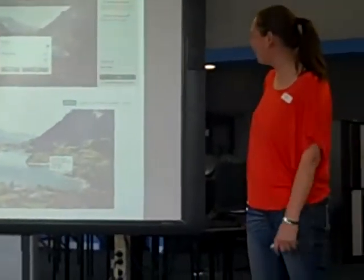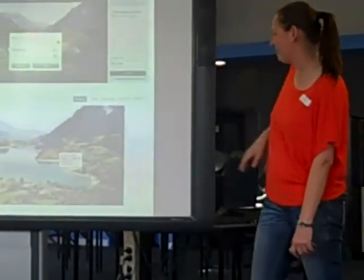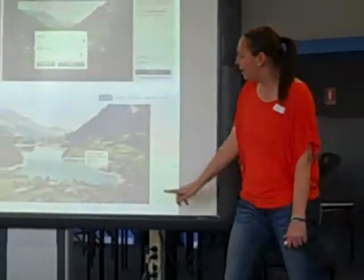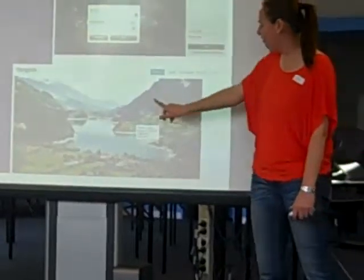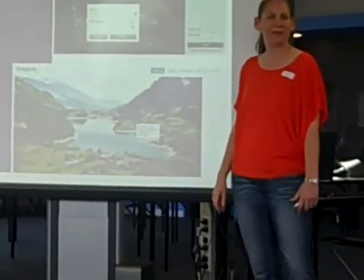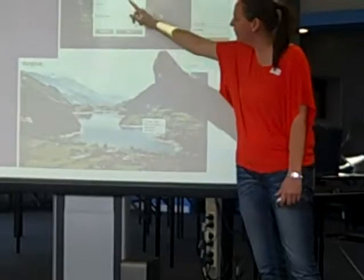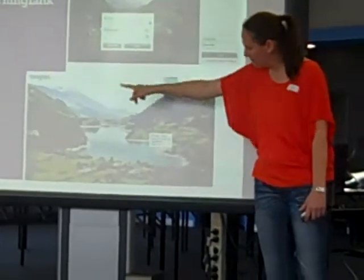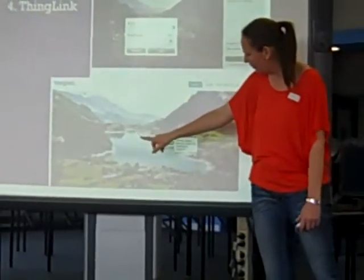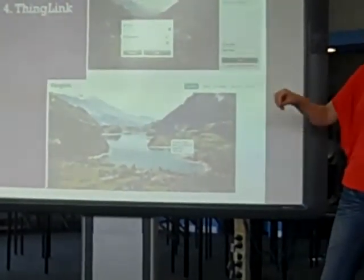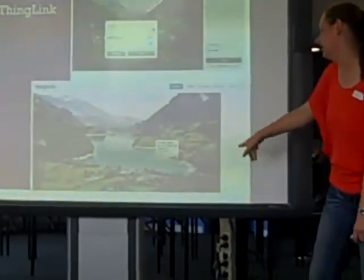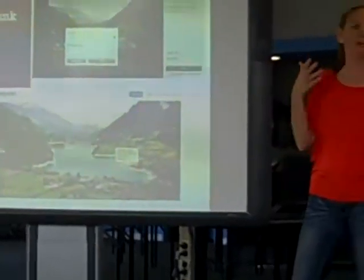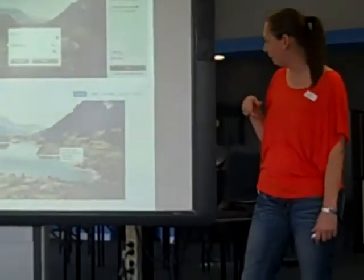ThingLink is what I used in the classroom a couple of months back — it's a photo or image tagging tool. All you do is upload an image, then click on the screen where you'd like to add a tag. You can add a web link or a description, save it, and that saves onto the image. You can see this is one we did where we looked at descriptions for the photo — for example, 'the soft sandy banks sit under the magnificent mountains.' Each time you hover over one of those tags, the description comes up.